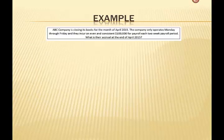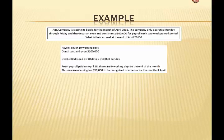ABC Company is closing its books for the month of April. The company only operates Monday through Friday and incurs a consistent $100,000 for each two-week payroll period. So what is our accrual at the end of April? We take $100,000 divided by 10 working days, giving us $10,000 per day. From April the 19th there are nine working days to the end of the month, so we're going to accrue $90,000 of salary expense for the month of April.